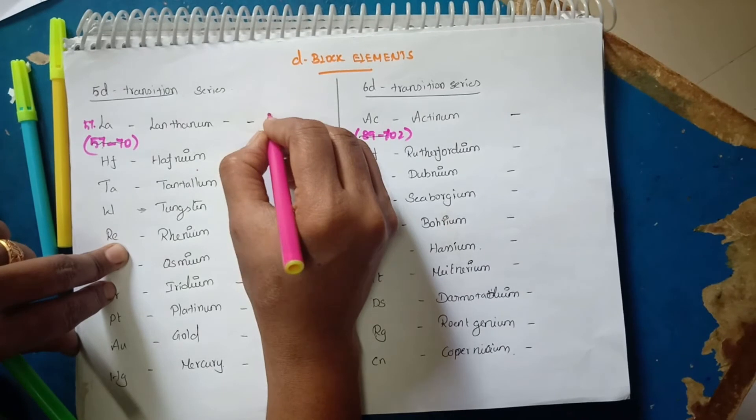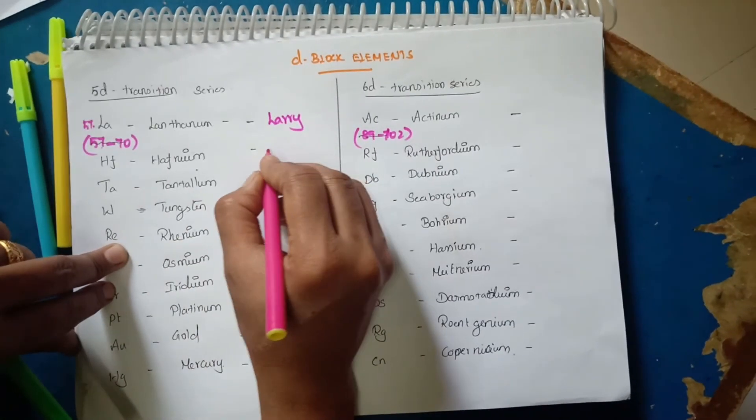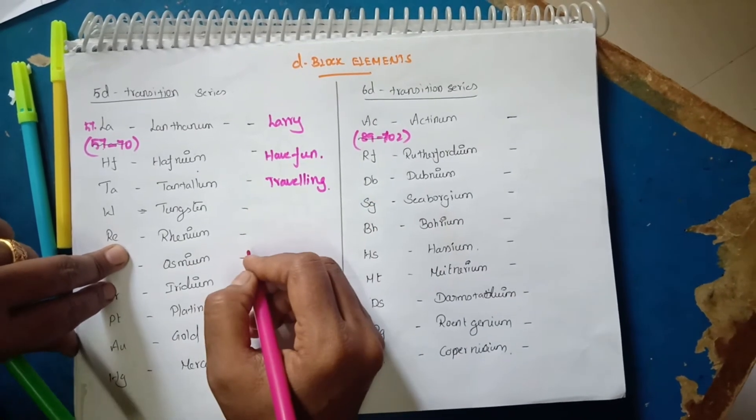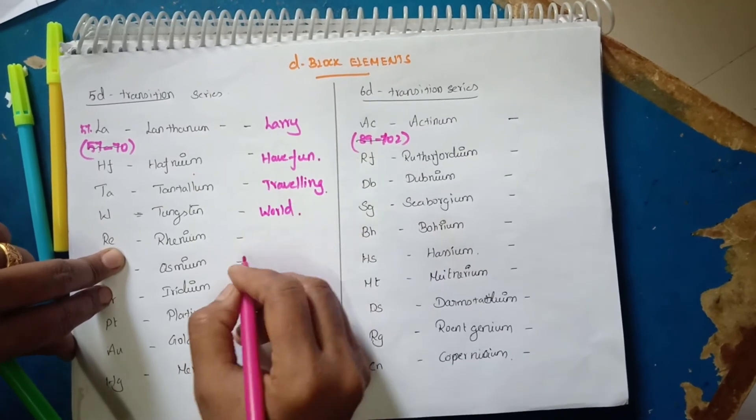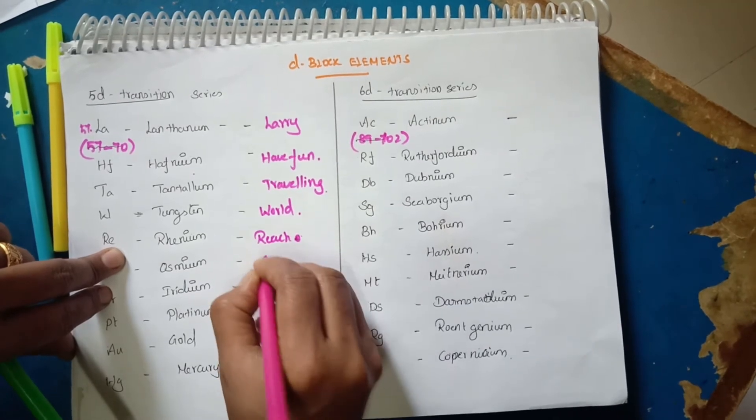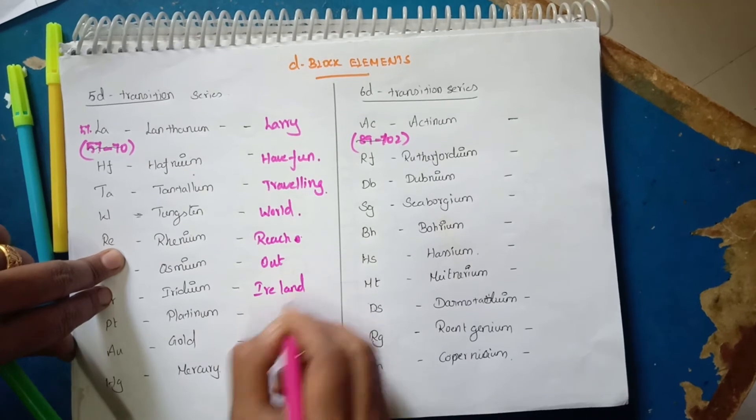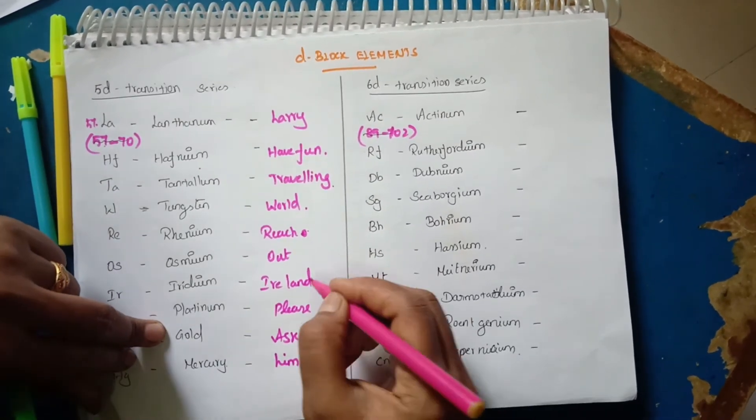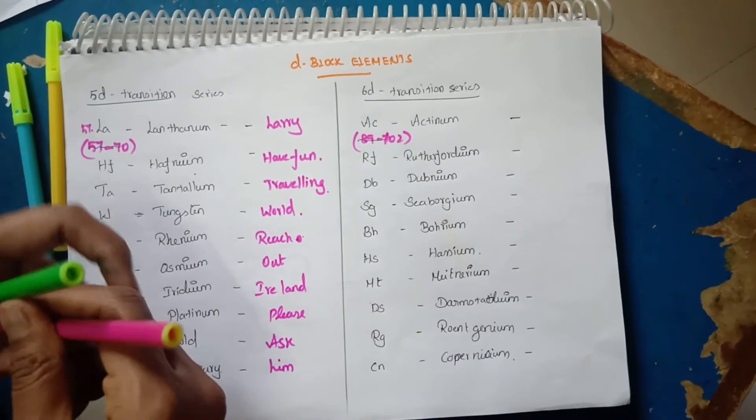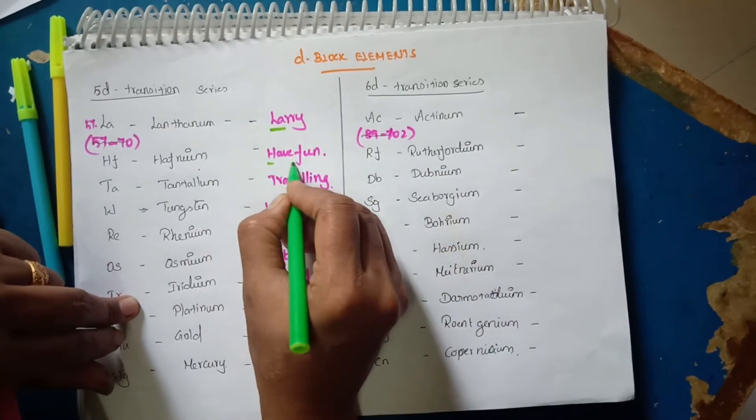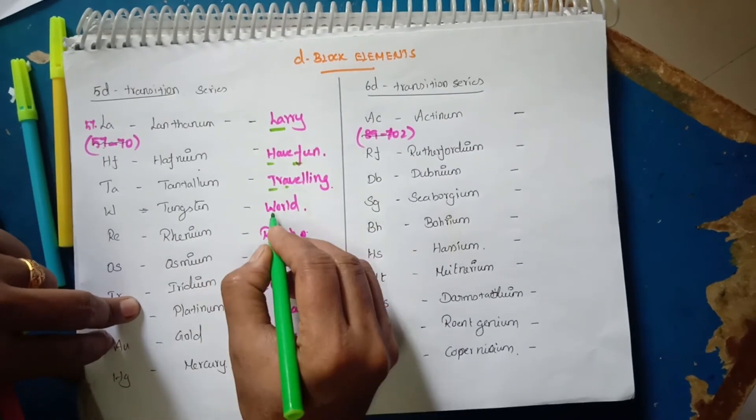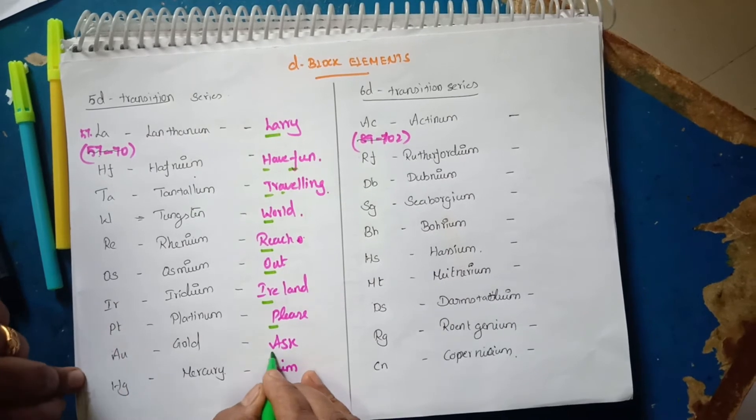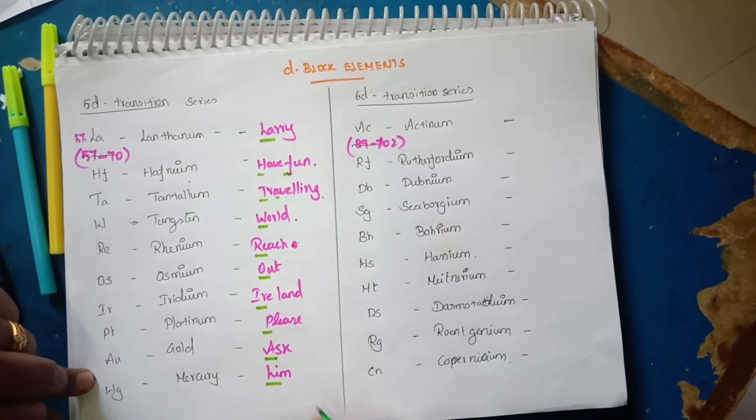Now we will see the story for 5D. Larry, have fun traveling, reach out Ireland, please ask him. So L for Lanthanum, H,F for Hafnium, T,A for Tantalum, W for Tungsten, Re for Rhenium, O for Osmium, I,R for Iridium, P for Platinum, A,U for Gold, and Hg for Mercury.